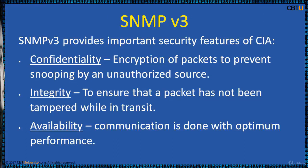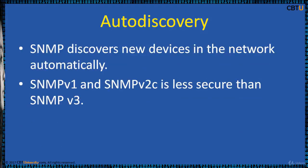In SNMP version 3, security is the main focus. It defines a security version of SNMP which facilitates remote configuration of the SNMP entities. The security aspect is addressed by offering both strong authentication and data encryption for privacy. SNMP provides important security features of the CIA triad: confidentiality, integrity, and availability. SNMP auto-discovery discovers new devices in the network automatically. SNMP version 1 and version 2c present security risks as SNMP read communities are broadcast in clear text. SNMP v3 mitigates this risk, and care should be taken when using the automatic storing feature.